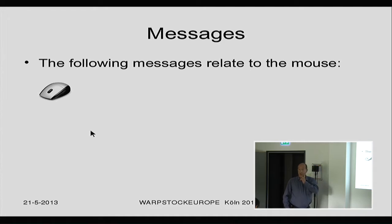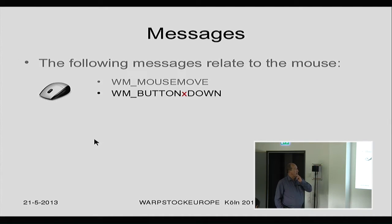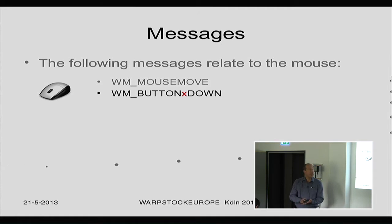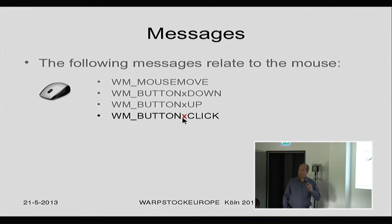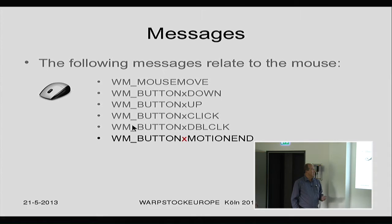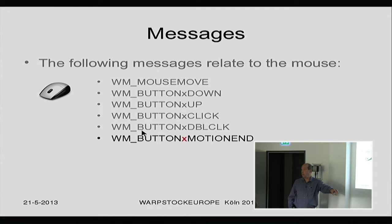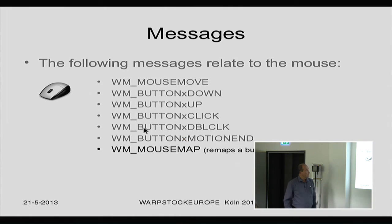For the mouse, you get a message when the mouse moves. You get a message when the button goes down, when the button is released, when the button is clicked, and when the button is double-clicked. You even get a message for when you have moved something and drop it on another object — the mouse end message, telling you the object has been dropped.